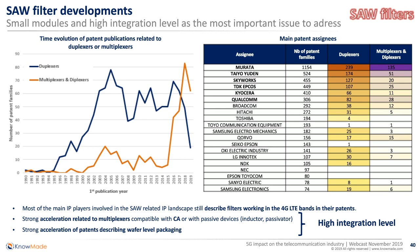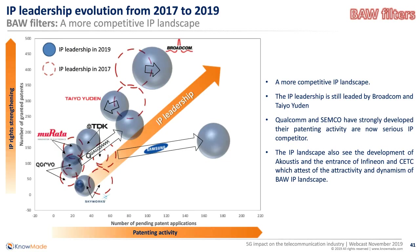For bulk acoustic wave filter IP landscape — the other kind of acoustic filter — it's a completely different story. The IP landscape is much more competitive, with four main IP players: Broadcom, TaiyoYuden, Qualcomm, and Qorvo. TaiyoYuden and Broadcom have been IP leaders for a couple of years, with a strong portfolio that could impede the freedom to operate of competitors through a high number of granted patents. But in the last two years, Qualcomm and more specifically Samsung Electro-Mechanics have really increased their number of BAW filter patents.